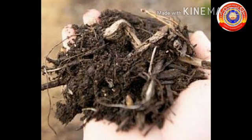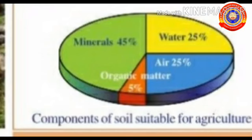Soil with high organic content is suitable for agriculture and has high water absorption capacity. The water absorption capacity is less for sand due to its lower organic content, as you studied in the previous class. Soil contains microorganisms such as fungi and bacteria — they decompose organic matter and thus improve the fertility of the soil. The soil which is good for agriculture contains 45% minerals, 25% water, 25% air, and 5% organic matter.